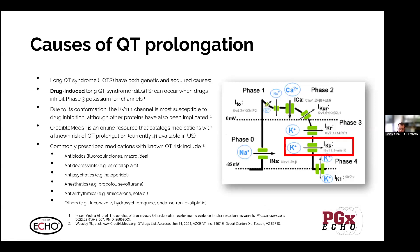QT prolongation can occur as a result of both genetic and acquired causes. Drug-induced QT prolongation occurs primarily when drugs inhibit phase 3 potassium ion channels. The IK channels on the right-hand side are potassium efflux channels — they pump potassium out of the cell.